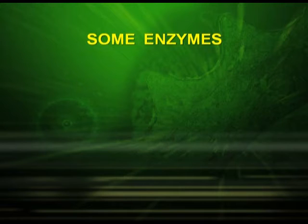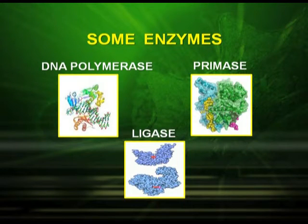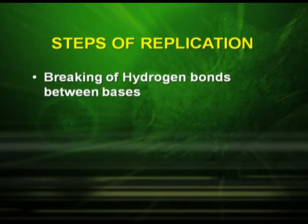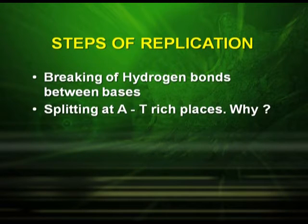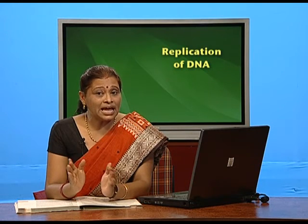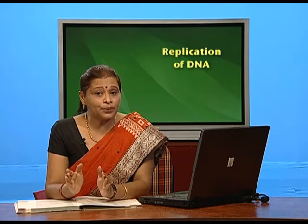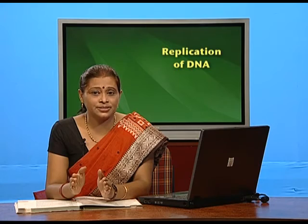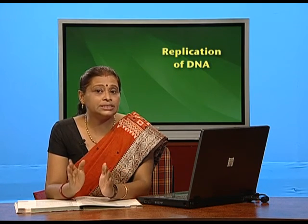Important enzymes that help in DNA replication include DNA polymerase, primase, and ligase. The first step is the breaking of hydrogen bonds between the bases. This breaking starts at AT-rich places because A and T have double hydrogen bonds while G and C have triple hydrogen bonds — so it is easier to break at the A-T level. The enzyme responsible is helicase, and splitting starts at the origin of replication, giving rise to a replication fork.